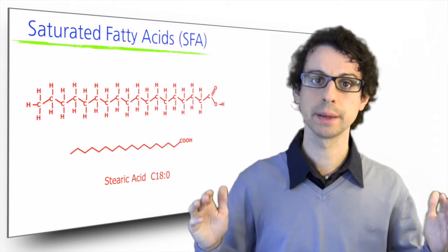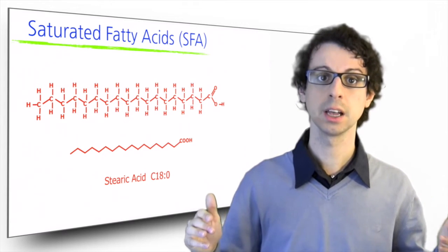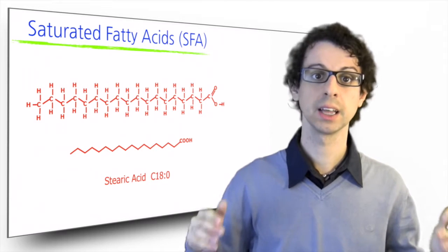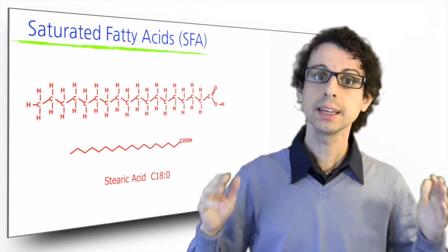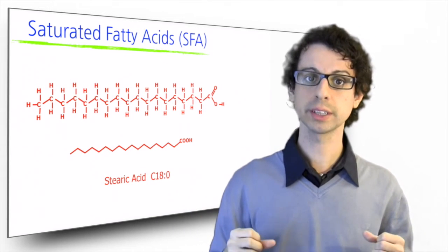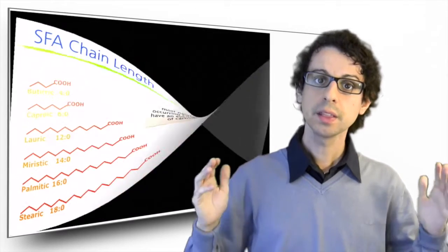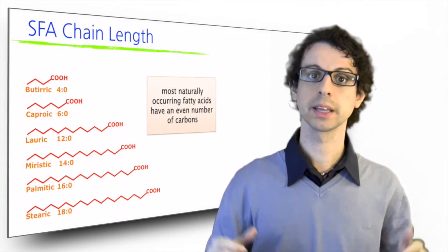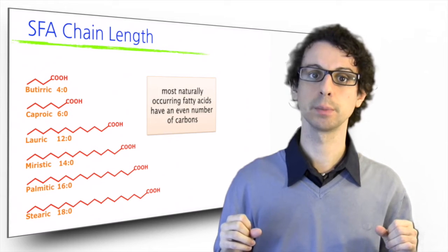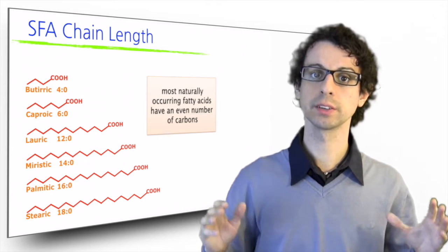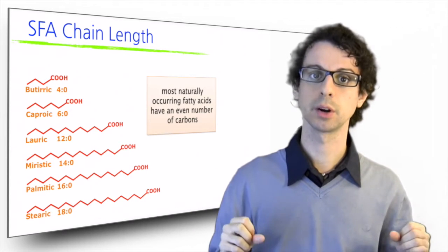It also has its own name. This is stearic acid, which is the saturated fatty acid 18 carbons long. It is actually the most abundant saturated fatty acid in our body. These are some other abundant molecules. They all have an even number of carbons. Most naturally occurring fatty acids have an even number of carbons.